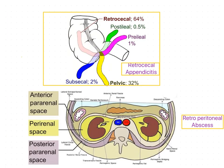The renal angle test can also be positive for conditions other than kidney pathology. One such condition is retrocecal appendicitis. As we know, the appendix can be positioned in different directions, and in the retrocecal position, appendicitis causes inflammation in the retroperitoneum, which makes the renal angle test positive.